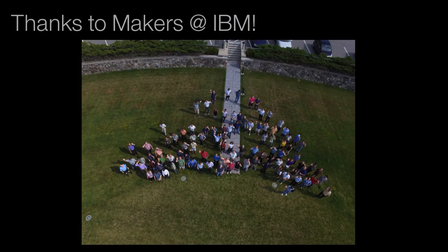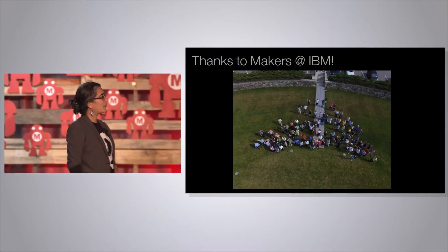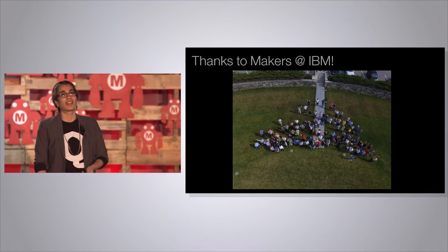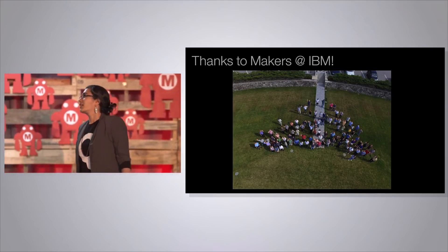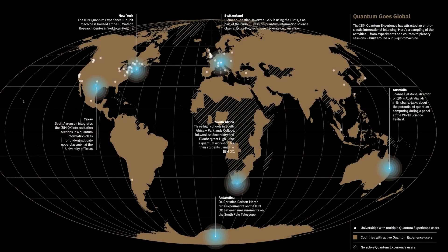All of this is made possible by a bunch of really committed and passionate makers at IBM. This is a drone's eye view of some of the team members outside on the lawn in New York — a lot of people put in a lot of hours to make this available to all of you for free. We have over 45,000 users worldwide. The white dots represent some of the top universities with the most users of the quantum computer. A lot of universities are using it to teach. There's a woman, Christine Moran, who's that dot at the South Pole — in between measurements on the South Pole telescope, she's just playing around with a quantum computer.